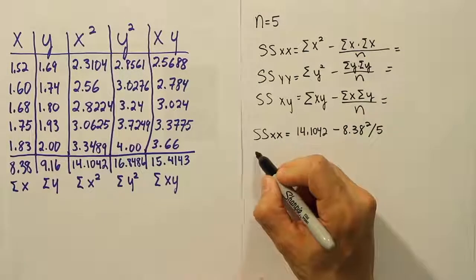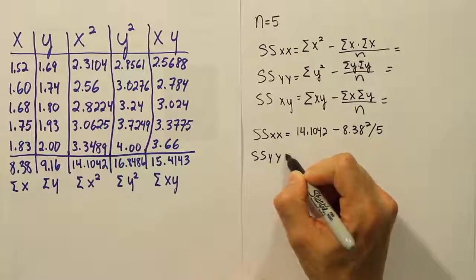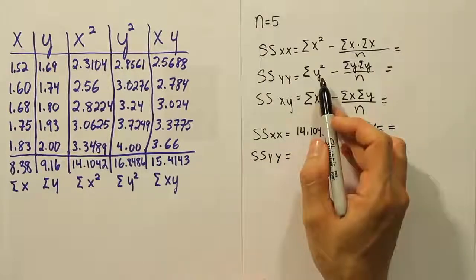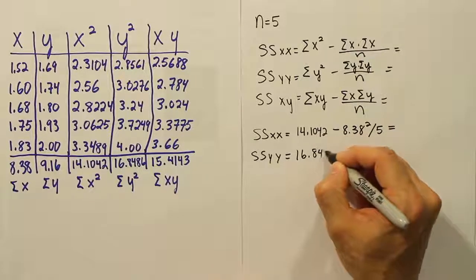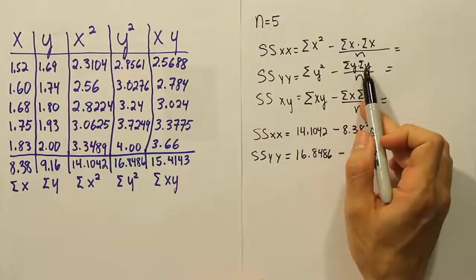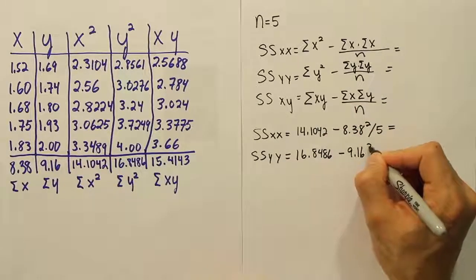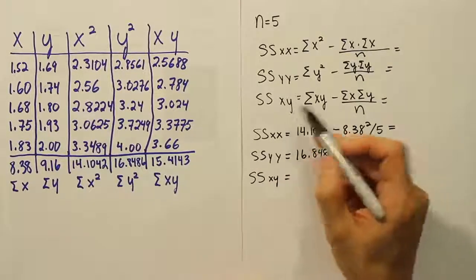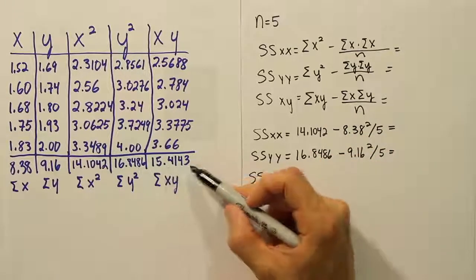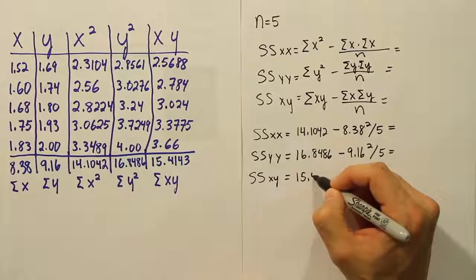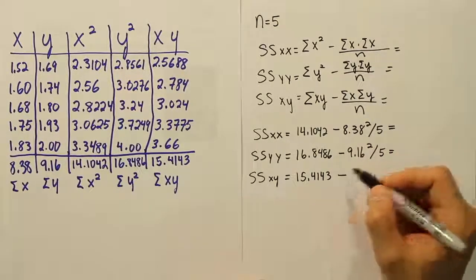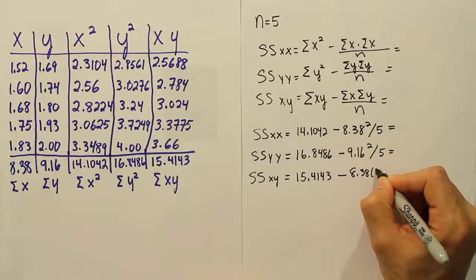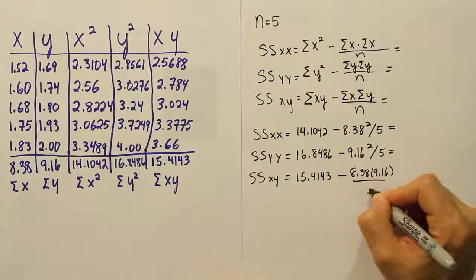Our next step then, I'm just going to fill all these in and then we'll do the crunching of the numbers to kind of make it more like an assembly line. Now for the next piece, SSYY, we're going to do the sum of the Y squareds. That number is 16.8486 minus the sum of Y squared, that's going to be 9.16 squared divided by five. Then finally, the last calculation is going to be the mixed term or the sum of the product of the two values, X and Y. That's going to give you 15.4143. Then we're going to have minus, and now in this case, it's the product of the sum of X and the sum of Y. So we'll have 8.38 times 9.16 and all that will be divided by five again.